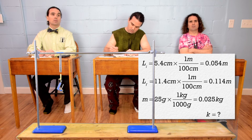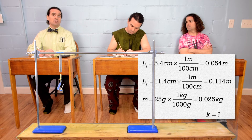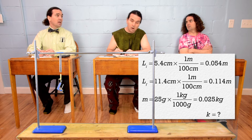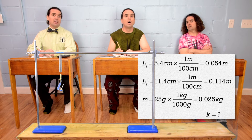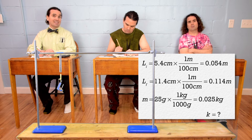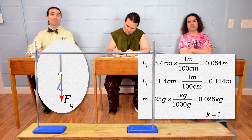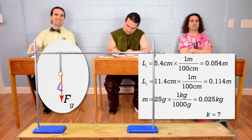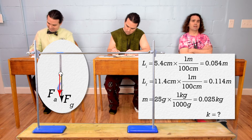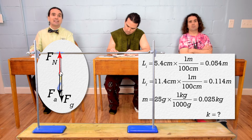I bet this has to do with forces. I think you should draw a free body diagram of the forces acting on the hanging mass. Okay, force of gravity is down, force of light is down, force normal is up, and the force of the spring is up.